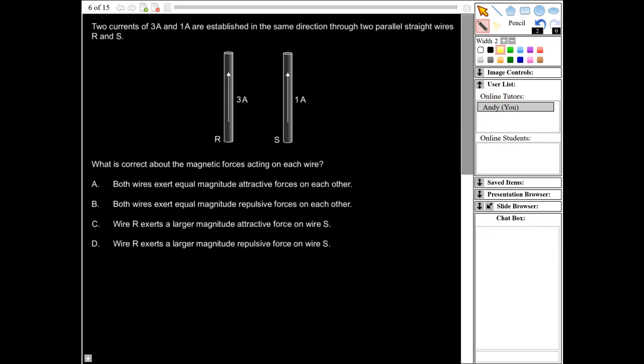So we've got two wires here, and they're going to produce magnetic fields, which is going to provide a force of attraction. So whenever you have magnetic fields in parallel wires, there's an attractive force between them, so we can disregard B and D. And then we should also know from Newton's third law that every action has an equal and opposite reaction. So because the forces are caused by the same thing, they're going to have equal magnitude. So the answer is going to be A. Both wires exert equal magnitude attractive forces on each other.